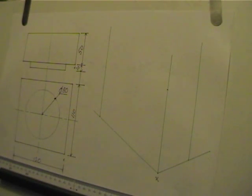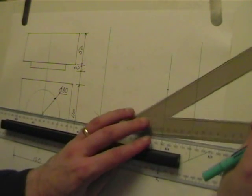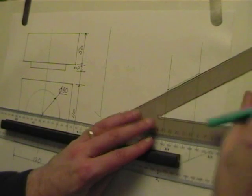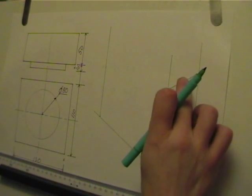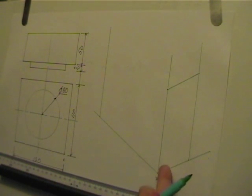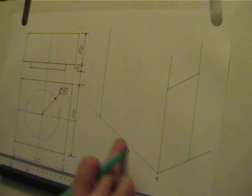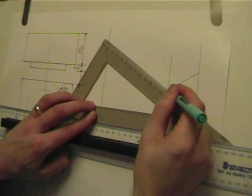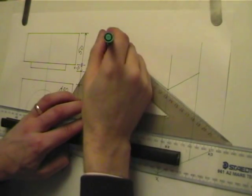I can now take my 60-30 set square again and I'm going to complete the box. So I draw a line in this direction because this top line is parallel to the bottom. So I have to draw a line which is parallel to it. And now I have to draw a line which is parallel to this one. Turn my set square around and draw a parallel line.